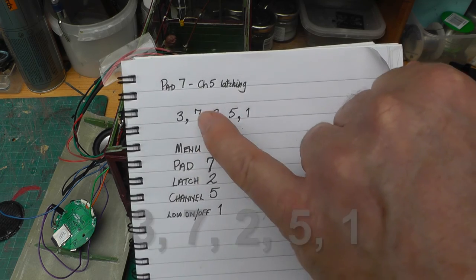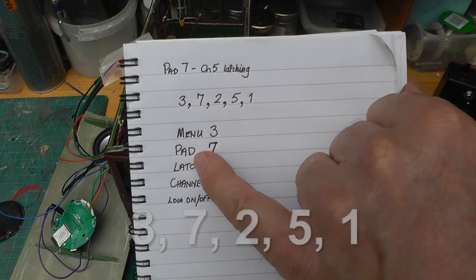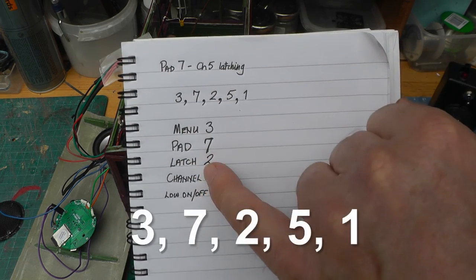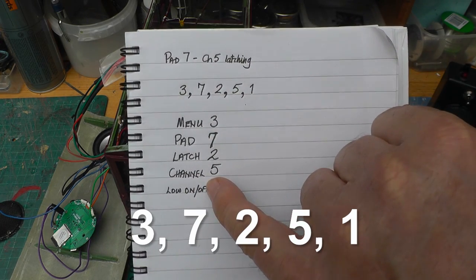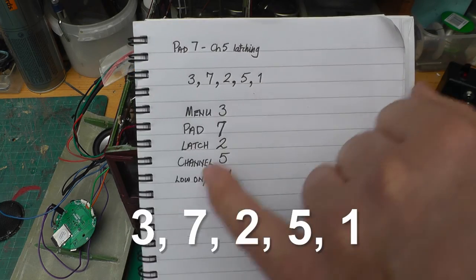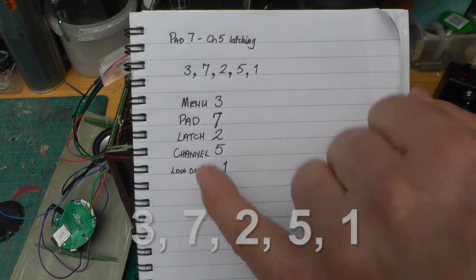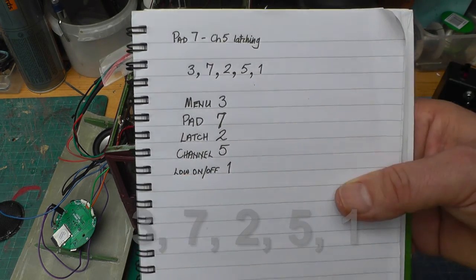So what that gives me is the following code: 3 for menu 3, 7 for pad 7, 2 because I want it latching, 5 because it's channel 5 that I'm using, and 1 to go on and off when the channel is low.